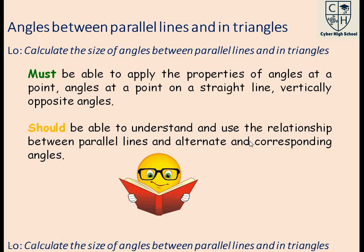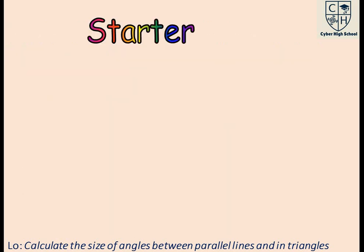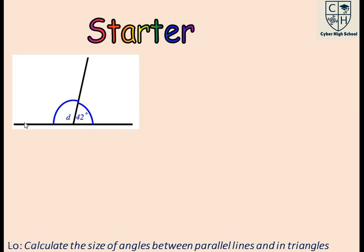Now let us quickly look at this activity. We have a straight line and a line that is dividing it. How can we calculate the value of d, knowing that this angle is 42 degrees? You can pause and quickly calculate — let's see your answer.